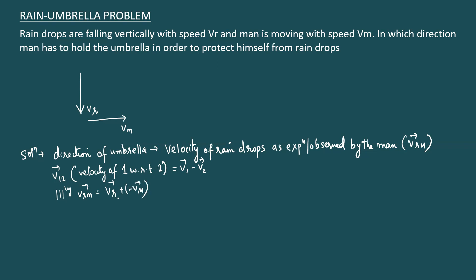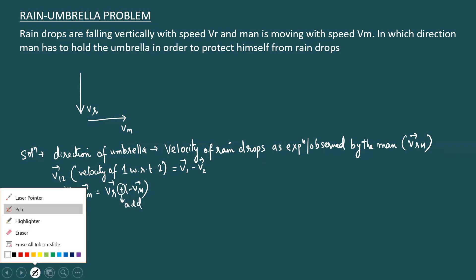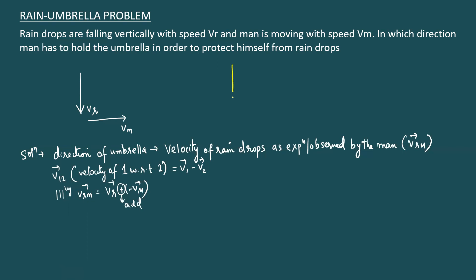To find vrm, I write minus vm as plus of negative vm. I already have vr — that is directed vertically downward. I take negative of vm: since vm is to the right, negative vm is to the left. Now the head of one vector coincides with the tail of the other. I'll use triangle law to add them — triangle law and parallelogram law are all equivalent.